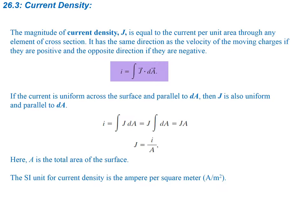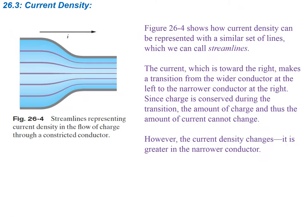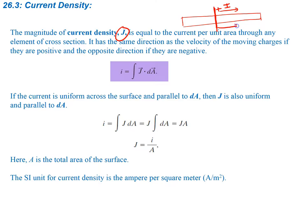So current density — we're going to use the letter J for current density — is equal to the current per unit area through any element of cross-section. It has the same direction as the velocity of the moving charges if they're positive, and the opposite direction if they're negative. If you had a positive charge going this way, the current density is going to be in that direction as well. For negative charge, the current density goes opposite to that negative charge. So the current density is going to be following the electric field inside of a wire.